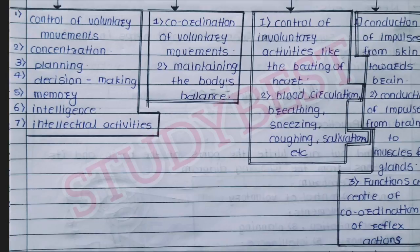For Cerebellum: coordination of voluntary movements and maintaining the body's balance. For Medulla Oblongata: control of involuntary activities like beating of the heart, blood circulation, breathing, sneezing, coughing, salivation, etc. For Spinal Cord: conduction of impulses from skin towards the brain, conduction of impulses from brain to muscles and glands, and functioning as a center of coordination of reflex actions.